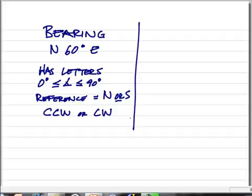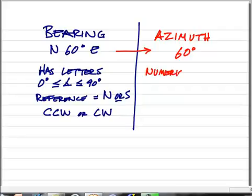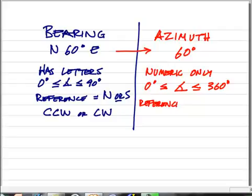So then let's compare this to Azimuth. If we take and convert this bearing to Azimuth it will be a simple 60 degrees, and an azimuth is numeric only, it has no letters. The range of values will be from 0 degrees up through 360 but no more. Our reference direction will be North.